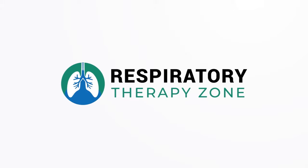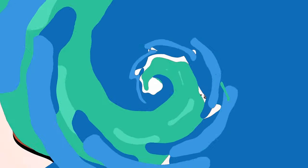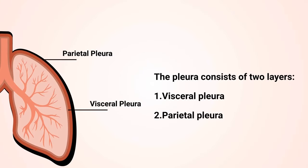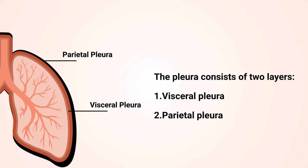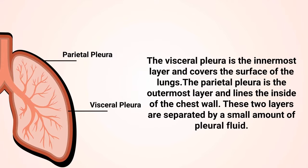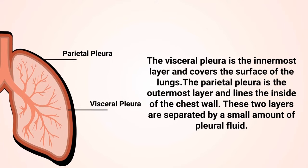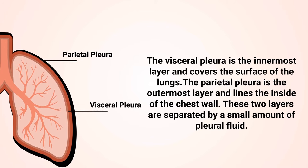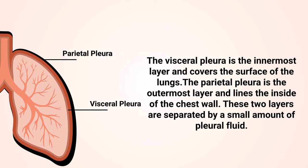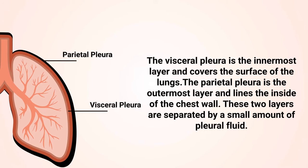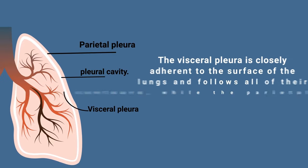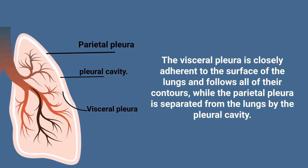The pleura consists of two layers: visceral pleura and parietal pleura. The visceral pleura is the innermost layer and covers the surface of the lungs. The parietal pleura is the outermost layer and lines the inside of the chest wall. These two layers are separated by a small amount of pleural fluid.